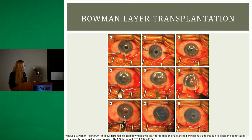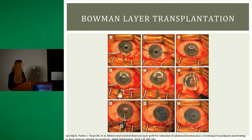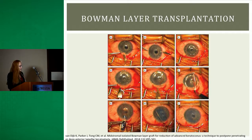Once you've done that, you fold your Bowman layer over on itself — kind of like a burrito — place it on the glide, insert it into that mid-stromal pocket, and then carefully unfold it using a 30-gauge air cannula.